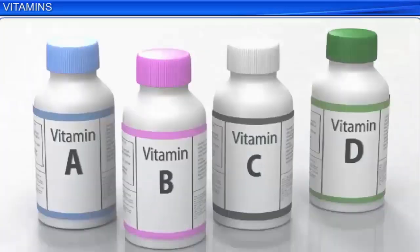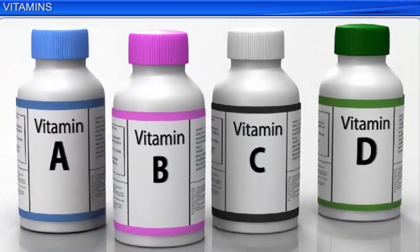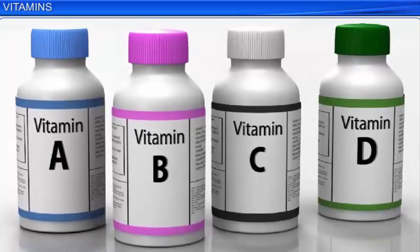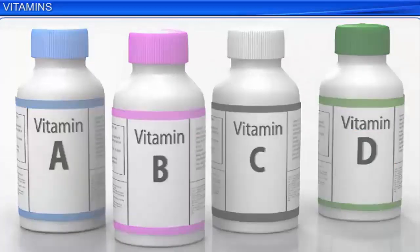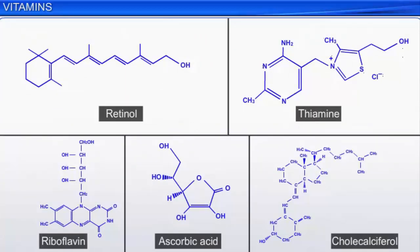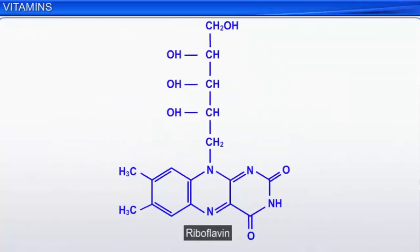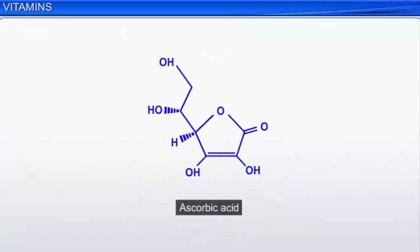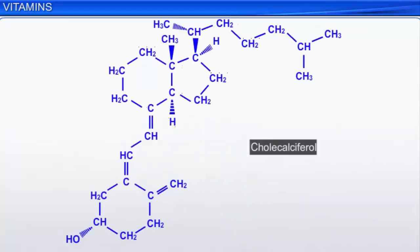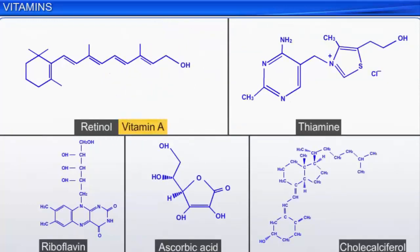When vitamins were first discovered, their chemical nature was not completely known; therefore they were named after the alphabets A, B, C, D, and so on. Later, the chemical nature of vitamins was established and now they are referred to by their chemical names such as retinol, thiamine, riboflavin, ascorbic acid, cholecalciferol, and so on. However, vitamins are now referred to by their alphabetical nomenclature also.